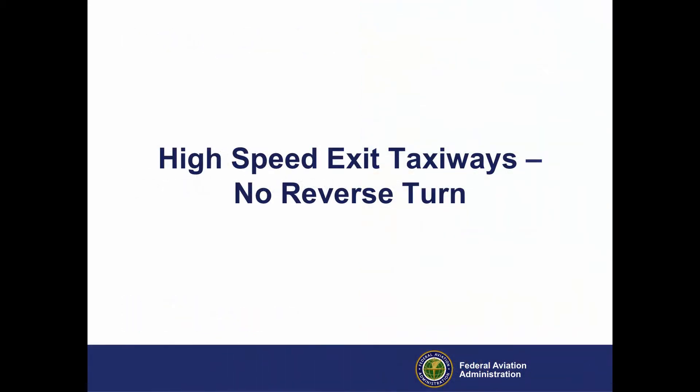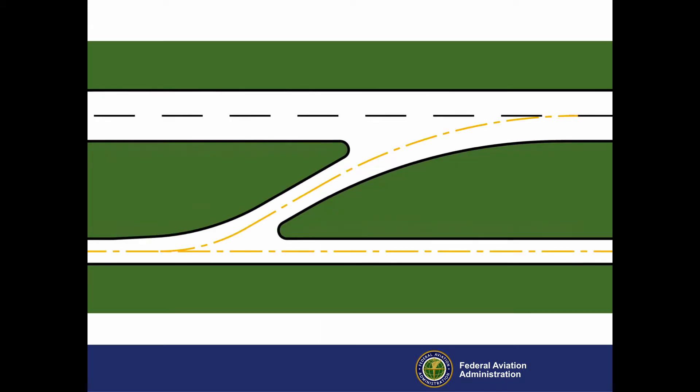High-Speed Exit Taxiways – No Reverse Turn. A high-speed exit taxiway is a special type of taxiway which is constructed to allow airplanes to exit the runway in less time and distance than is needed to slow to the speed necessary for a 90-degree turn. We'll discuss high-speed exit taxiways without reverse turns. High-speed exit taxiways are for one-way traffic — they are not runway entrances or crossings. All high-speed exit taxiways form an angle of 30 degrees with the runway centerline, and the radius of the turn off the runway is always 1500 feet.